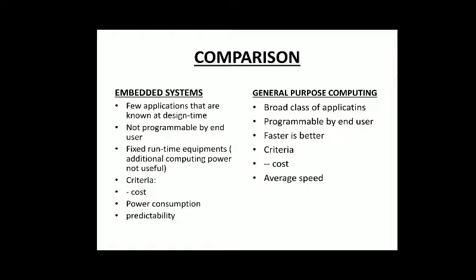In the case of embedded systems, because power consumption needs to be low, faster is not always better. The criteria here are cost and predictability, and processing speed is kept at an appropriate average level.